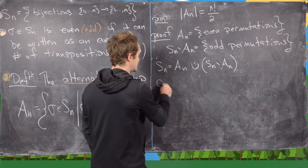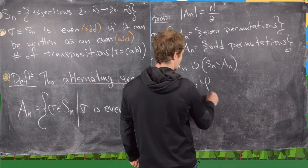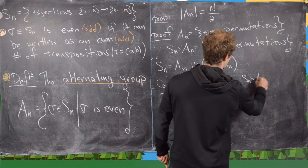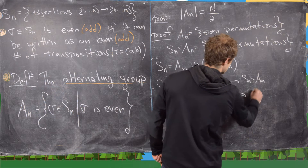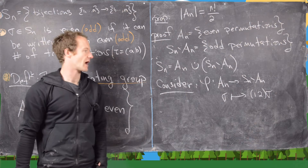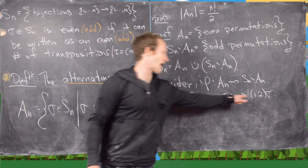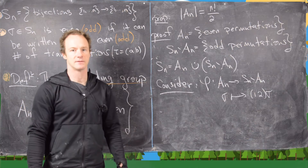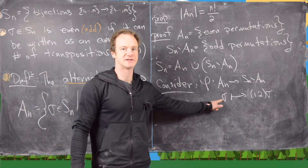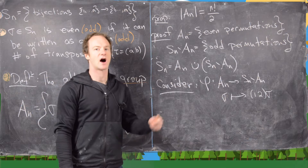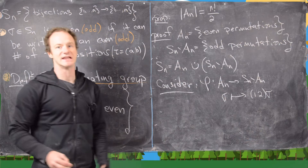We consider the map φ: An → (Sn minus An) defined by φ(sigma) = (1 2)·sigma, where (1 2) is the transposition. We need n ≥ 2 for this transposition to exist in Sn. If sigma is in An, it can be written as an even number of transpositions, so (1 2)·sigma is an odd number of transpositions, which means it is not in An — so φ does map into Sn minus An. Now we want to show this is a bijection.